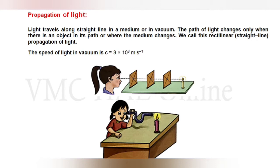The path of light changes only when there is an object in its path or where the medium changes. Agar iske path mein koi doosra medium aa jaata hai, toh light ka path change ho jaayega — otherwise iska path change nahi hoga. We call this property rectilinear propagation of light, or straight line propagation of light.